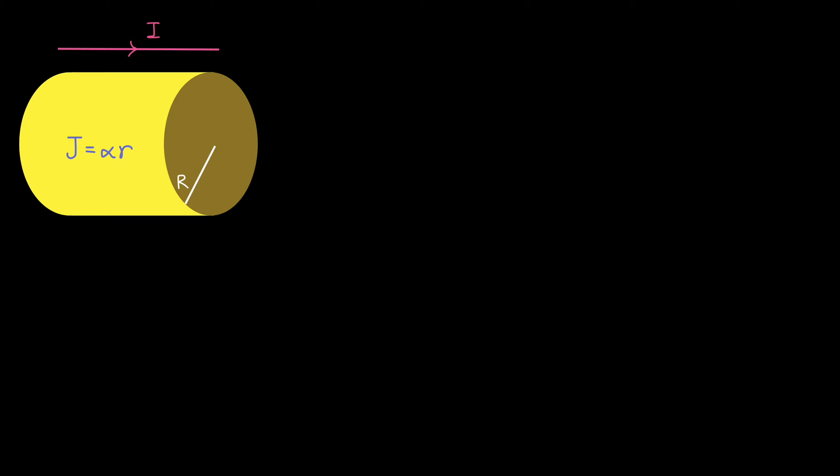Our first task is to express alpha in terms of I and capital R by integrating J, the current density, over the cross-sectional area. The total current passing through the wire is the integral of the current density J over the cross-sectional area.